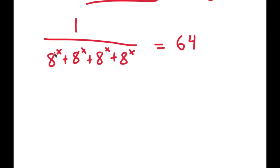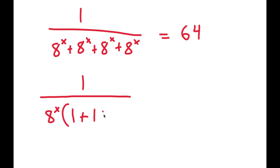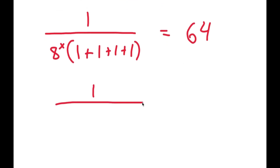Now from here, notice how I have 4 of the same terms in the denominator, meaning I can factor out that one term. So I get 1 over a to the power of x times — well, a^x divided by a^x is 1 — so I get 1 plus 1 plus 1 plus 1, which equals 4. So I get 1 over a to the power of x times 4 is equal to 64.